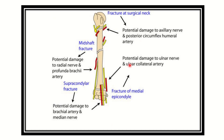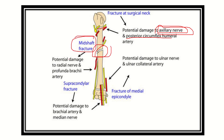Here is another important diagram. At the surgical neck of the humerus, the axillary nerve is present, so damage to the axillary nerve is very common with a surgical neck fracture. The posterior circumflex humeral artery is also present here. In the mid-shaft of the humerus, the radial nerve runs closely, so a mid-shaft fracture may cause damage to the radial nerve and the profunda brachii artery.